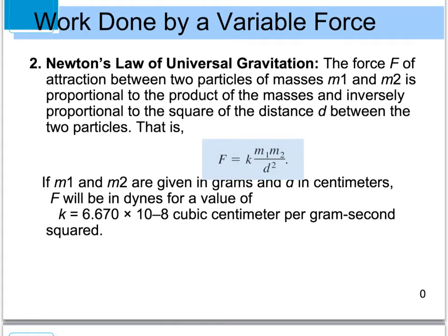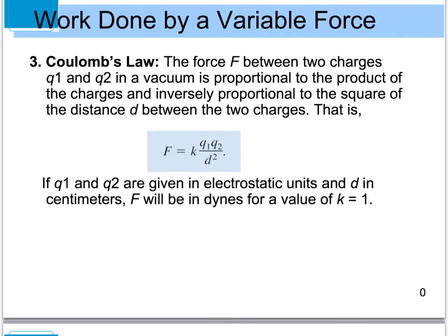The second variable force law is Newton's law of universal gravitation: force equals K times M1 times M2 divided by D squared, where K is a proportionality constant, M1 and M2 are two different masses, and D is the distance between those two particles. The third law is Coulomb's law: force equals K times Q1 times Q2 divided by D squared, where Q1 and Q2 are charges in a vacuum and D is the distance between the two charges.